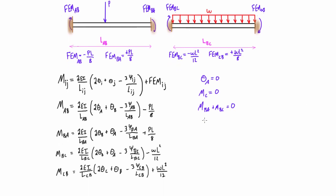With no settlement, the ψ term is zero in all equations. All θ_A terms cancel to zero. We set M_CB equal to zero and solve that equation. Then we take the full expression for M_BA plus the full expression for M_BC and set their sum equal to zero. What we end up with is M_CB equals zero as one equation, and the sum M_BA + M_BC equals zero as another — giving us two equations with two unknowns.